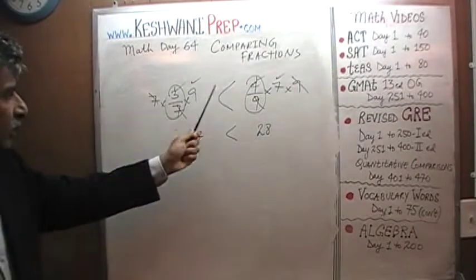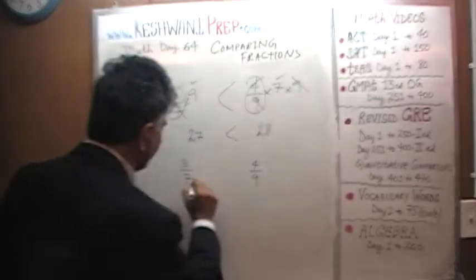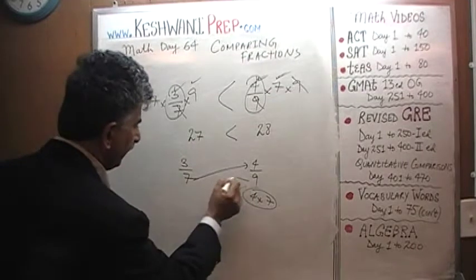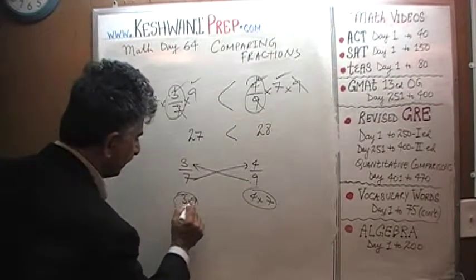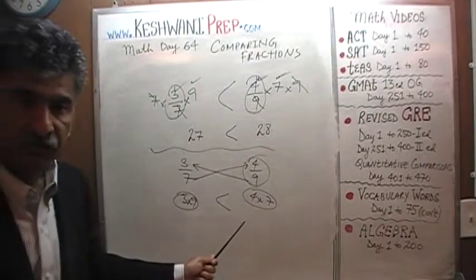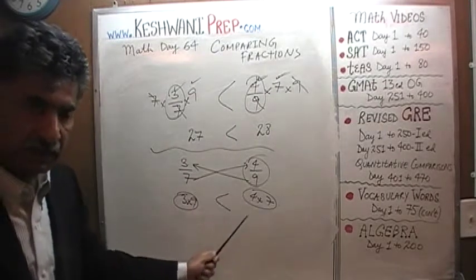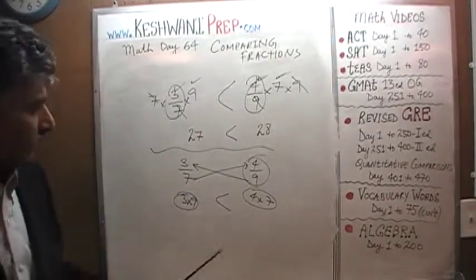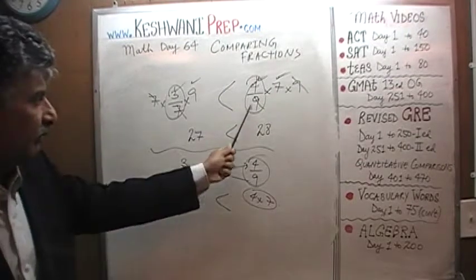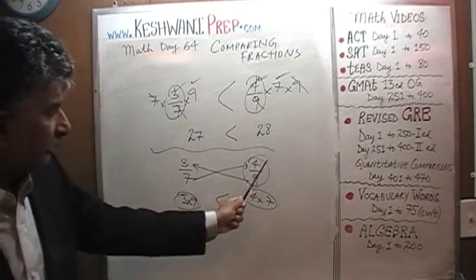If you don't want to do the intermediate step, here is the shortcut: with 3/7 and 4/9, you take the 7 and multiply it by 4 — you get 4 times 7 on one side — then you take the 9 and bring it to the top — 3 times 9 is 27. Since 27 is less than 28, that side is bigger. What's going on behind the curtain is that you're multiplying both fractions by 9 to get rid of the 9, and then both fractions by 7 to get rid of the 7.